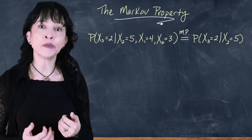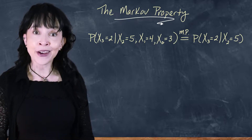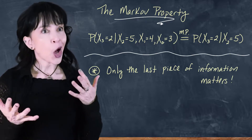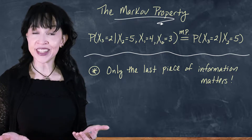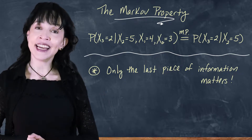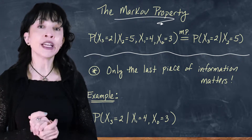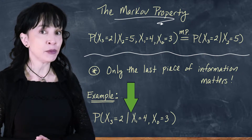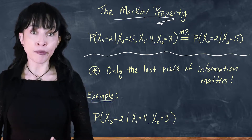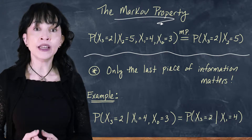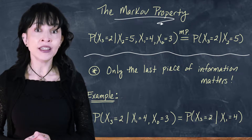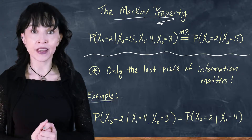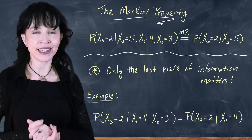The Markov property says that only the most recent piece of information matters, and we can drop what's going on at times one and zero. But did you know only the most recent piece of information matters, even if you're skipping time steps? So the probability that x3 equals two, given x1 equals four and x0 equals three — we're missing what's going on at time two — is going to be, by the Markov property, the probability that x3 equals two given the most recent piece of information, which is what is going on at time one. So it's okay that we never knew what happened at time two.